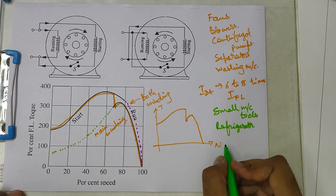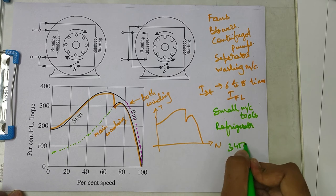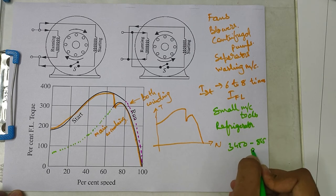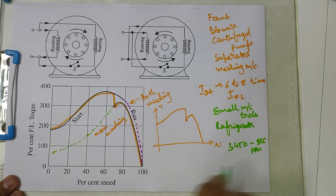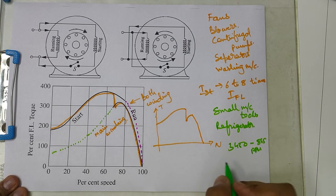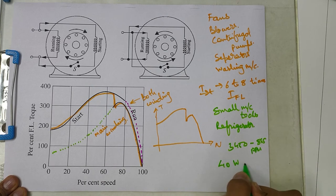Usual speed range is 3450 RPM to 865 RPM. In this range the motors are made and it is available in 40W to 250W ratings.